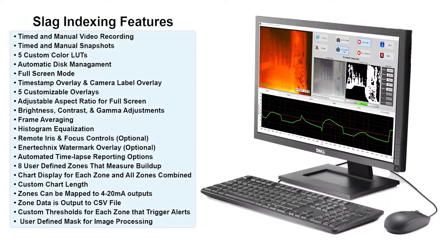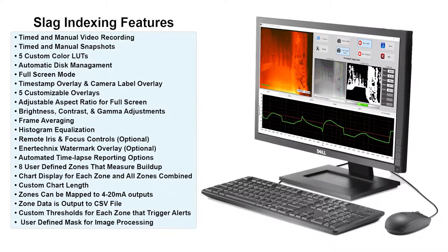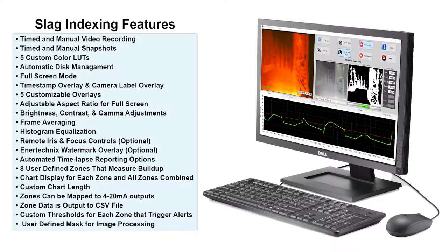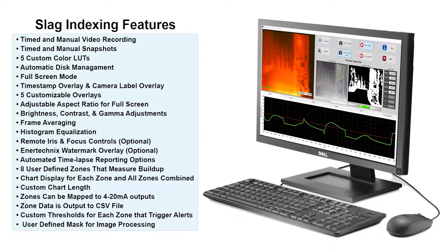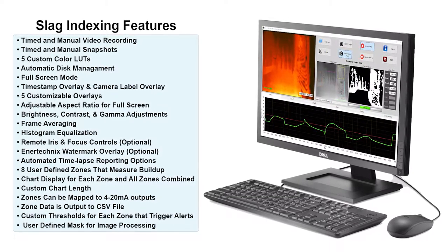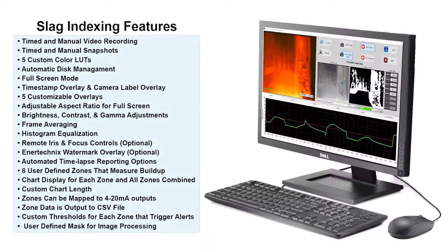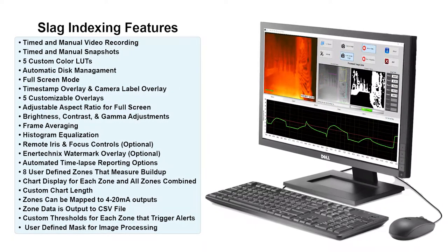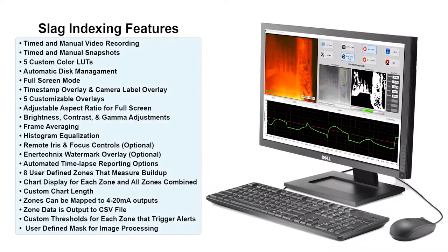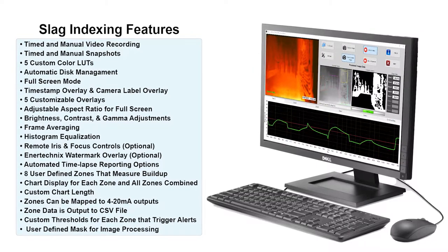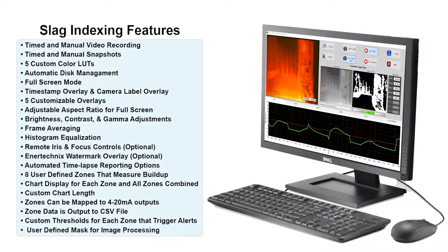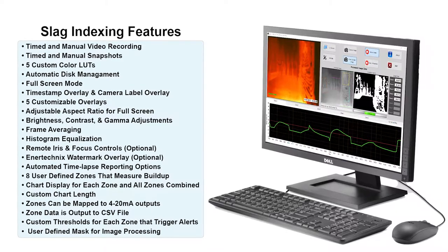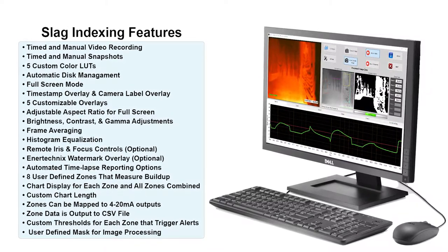Additional features include frame averaging, histogram equalization, remote iris and focus controls if you have the optional hardware, an optional EnerTechnics watermark overlay, automated time-lapse reporting options, eight user-defined zones that measure buildup, chart display for each zone and all zones combined, a custom chart length, zones that can be mapped to 4 to 20 milliamp outputs, zone data output to a CSV file, custom thresholds for each zone that trigger alerts, and a user-defined mask for image processing.